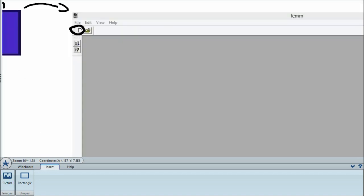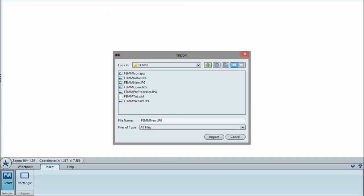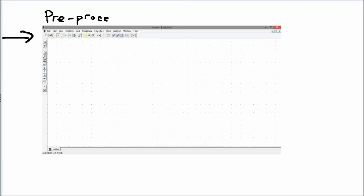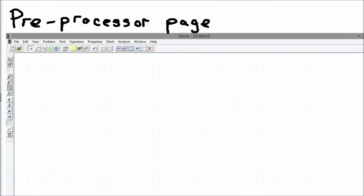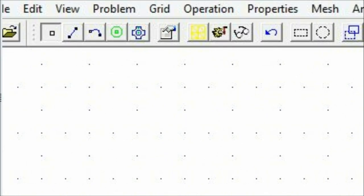We can then select a new problem, a magnetics problem. This will lead us to the preprocessor page, which allows us to input all the data that we need to have selected. We can use the tools on the top toolbar to draw our geometry.